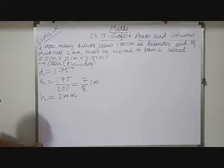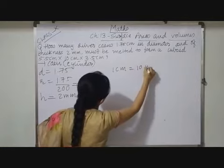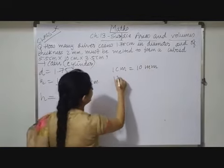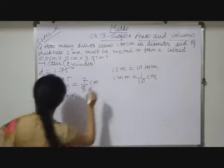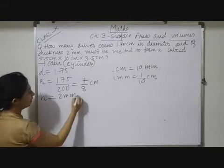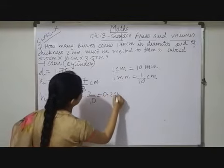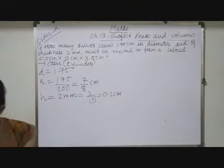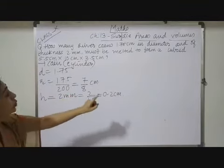So 1 centimeter is equal to 10 mm. We are knowing that 1 centimeter equals to 10 mm, so 1 mm is equals to 1 by 10 centimeter. So to convert into centimeter I have to divide it by 10, so we will get 0.2 centimeter.